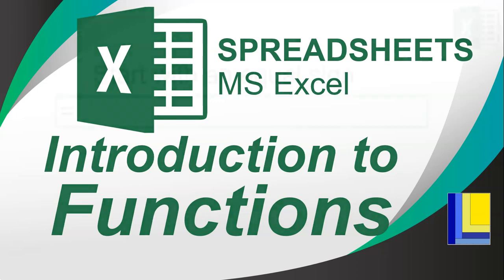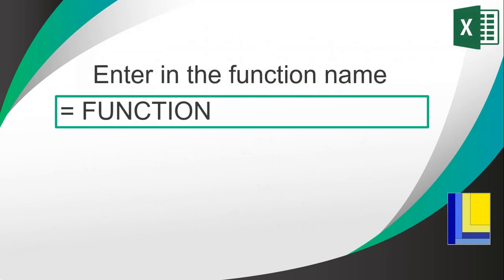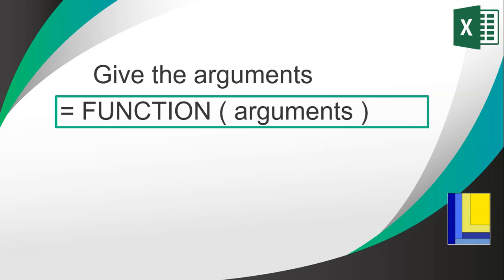When you are writing a function it's very similar to a formula. You start with an equal sign and then you enter the name of the function. There are a whole bunch of functions built into Excel. You use the function name and then put brackets at the end, and inside those brackets you give the arguments. The arguments are the information that the function needs in order to produce a result. Sometimes there'll be no arguments and sometimes there will be one or many arguments.